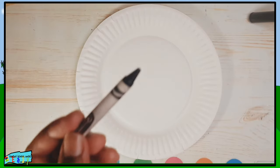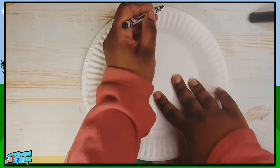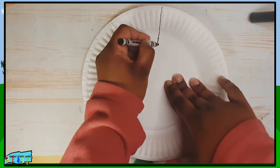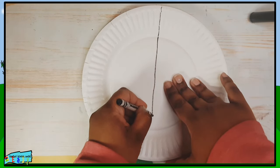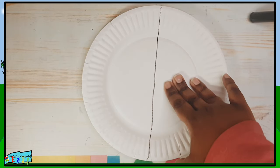And all you're going to do is take the paper plate and take the crayon and split the paper plate in half using the black crayon.